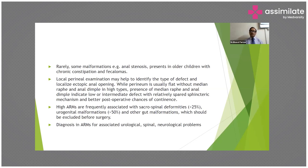Anorectal malformations are of three types: high, low, and intermediate variety. High anorectal malformations are frequently associated with sacro-spinal deformities (more than 25%) and urogenital malformations (more than 50%) and other gut malformations, which should be excluded before surgery.